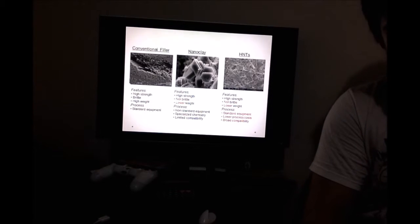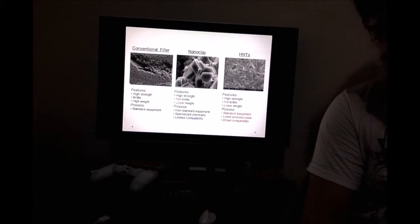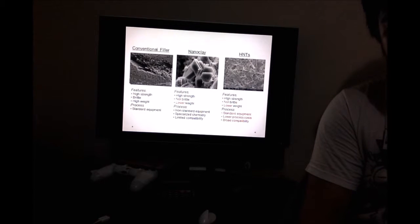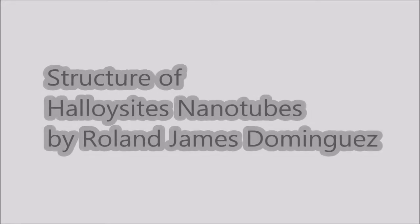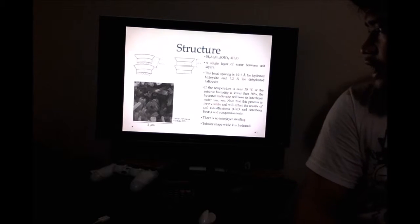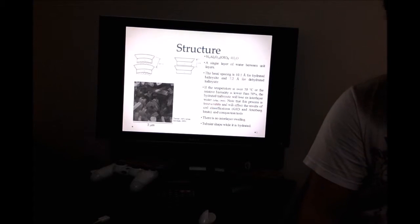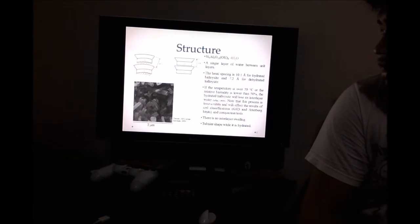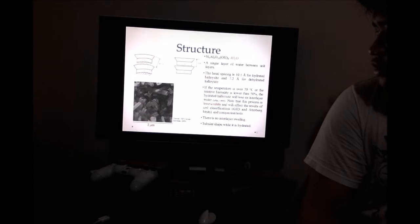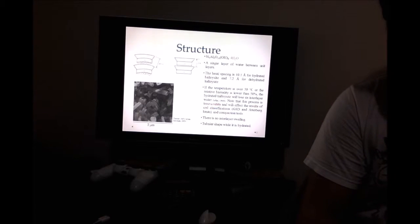Halloysite nanotubes have broad compatibility, unlike nanoclay which has limited compatibility. The structure of Halloysite nanotubes is composed of silicon, aluminum, oxygen, and hydrogen.